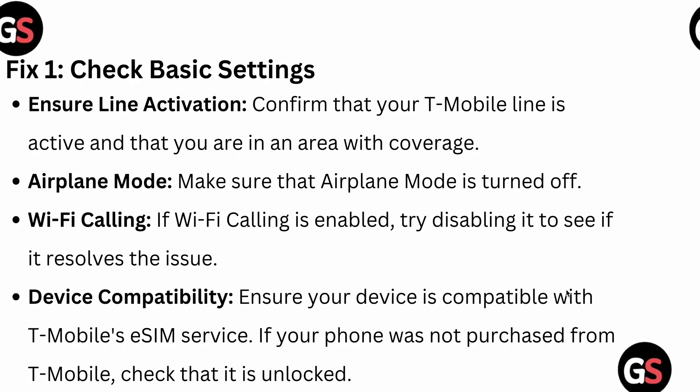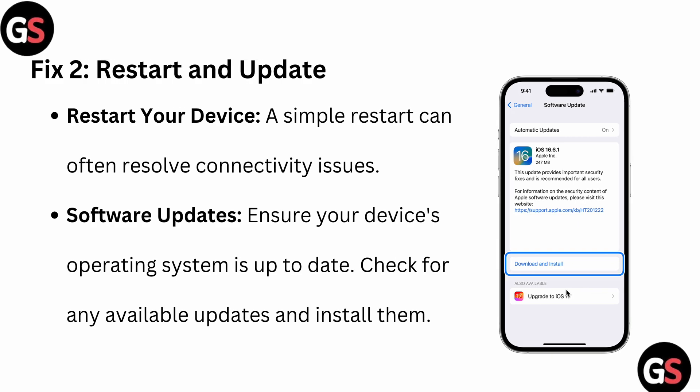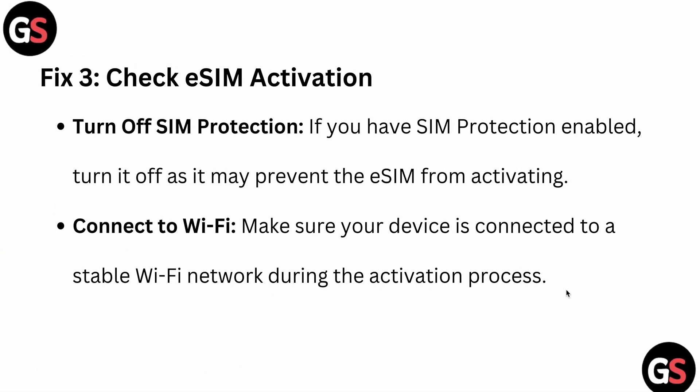If your phone was not purchased from T-Mobile, check that it is unlocked. The second fix is to simply restart your device, as a restart can often resolve connectivity issues. Also ensure your operating system is up to date — if any updates are available, install them immediately.